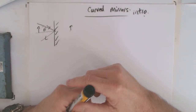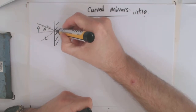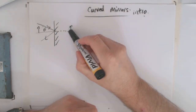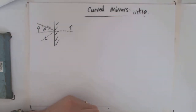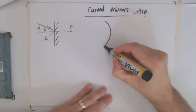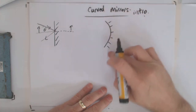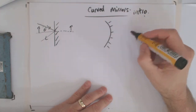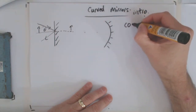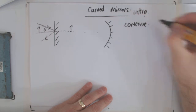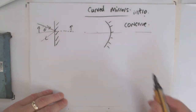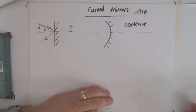Now we come to curved mirrors, which are interesting. When we did these diagrams, you probably took it for granted that the image was the same distance as the object distance, and that the image size was the same size as the object. Now we've got curved mirrors — this doesn't happen. So the two types of curved mirrors: this is what we call a concave mirror, and there are a few things we need to know about it. One is the focal length, and one is the center of curvature.